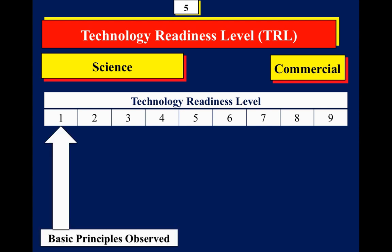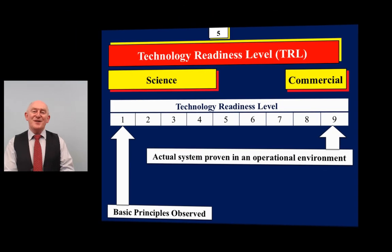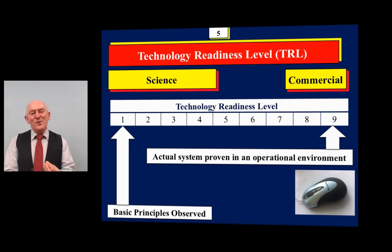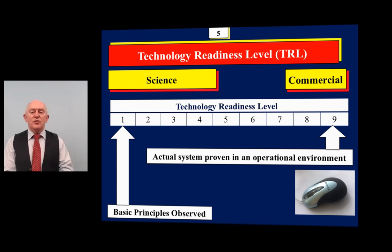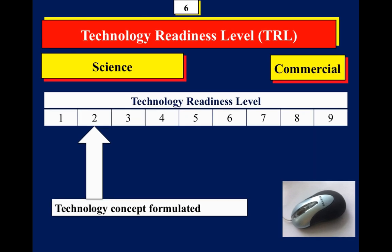TRL one is where basic principles are observed — the home territory of basic scientists — whereas TRL nine means the product is ready to go on the market. In this presentation I'm going to use a computer mouse as an example of how TRL can explain the evolution of a technology. Initially someone had the concept that you could move an icon across the computer screen, and the technology concept was formulated — that is TRL two.